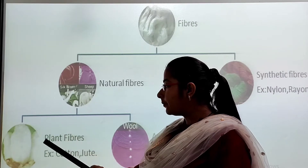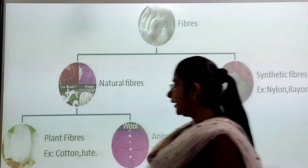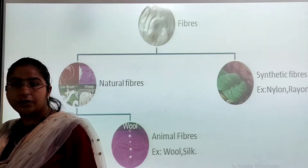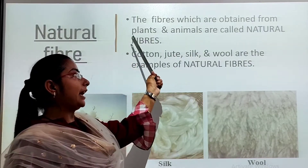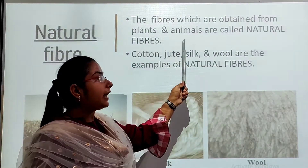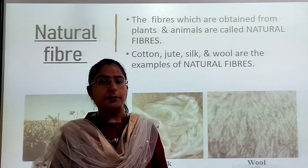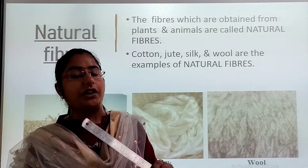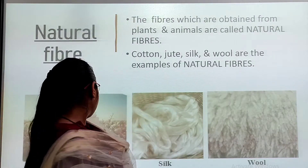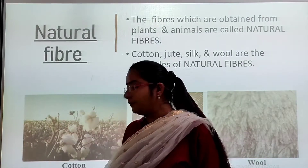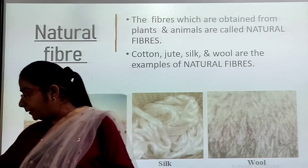Examples of plant fibers are cotton and jute. Examples of animal fibers are wool and silk. Fibers which are obtained from plants and animals are called natural fibers. Examples are cotton, silk, and wool.